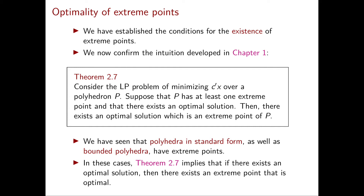Now we're going to prove Theorem 2.7, but before that, let me make a couple of comments. The first is that this theorem finally confirms the intuition that we developed in chapter 1, namely that in most linear programming problems, there's always an optimal solution which is an extreme point of P. This is also the intuition that we formalized as the third fundamental property of linear programming problems at the beginning of chapter 2.